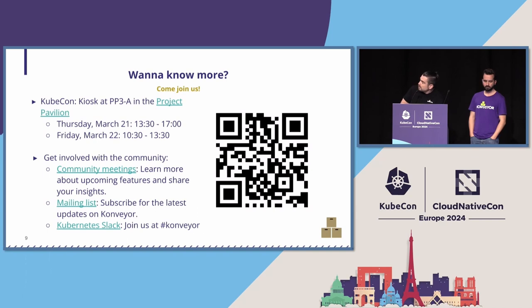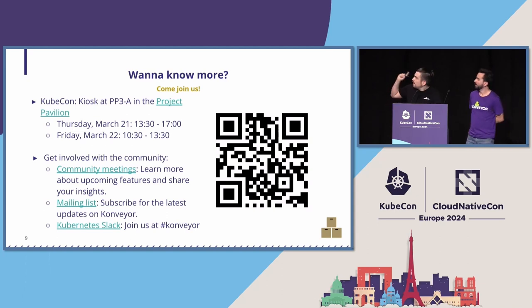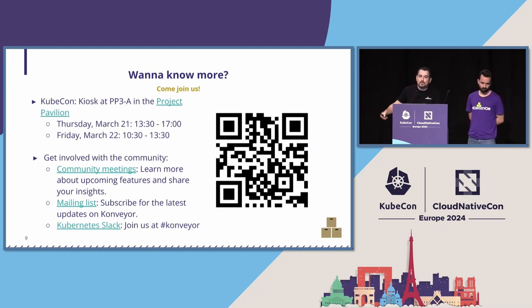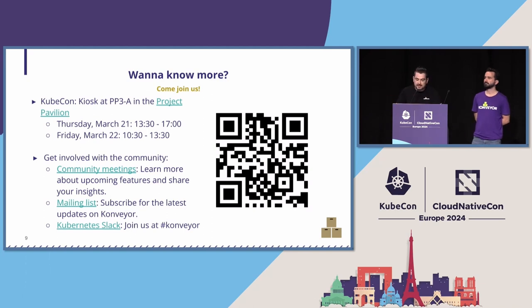And that's all we have for today. You have our coordinates there — we'll be Thursday afternoon and Friday morning at the CNCF Pavilion. You have the QR code to our website. If you want to get involved, we have a room at the Kubernetes Slack instance mailing list — just come join us and tell us what your pains are with modernization and migration. Thank you so much.